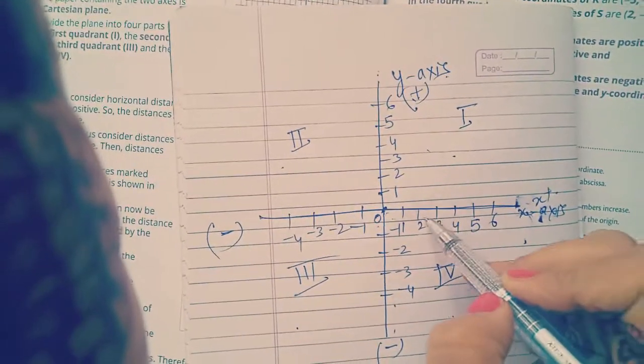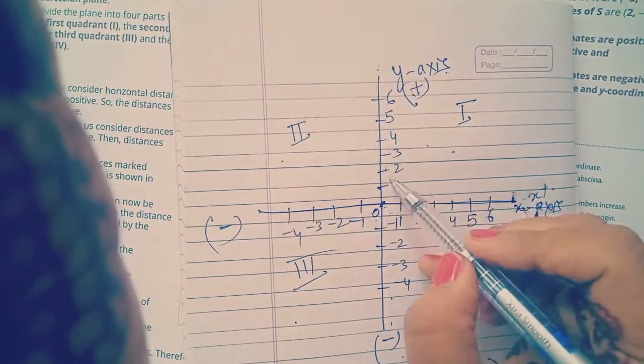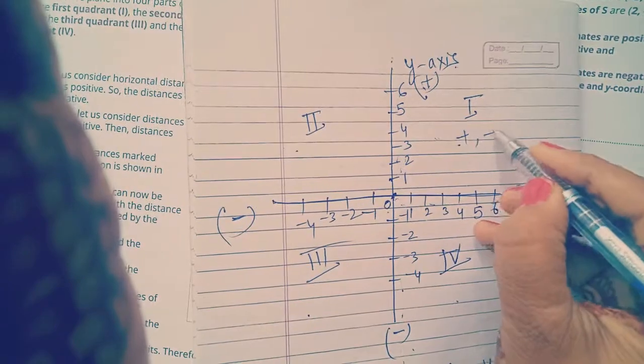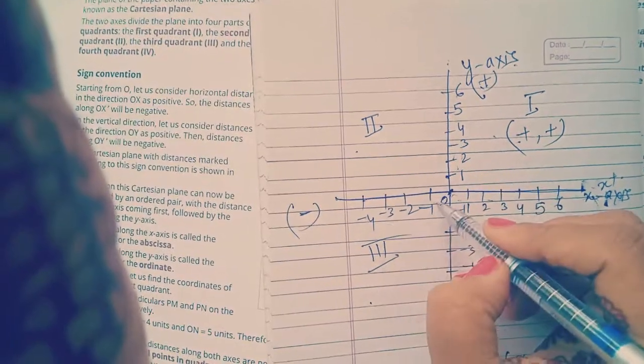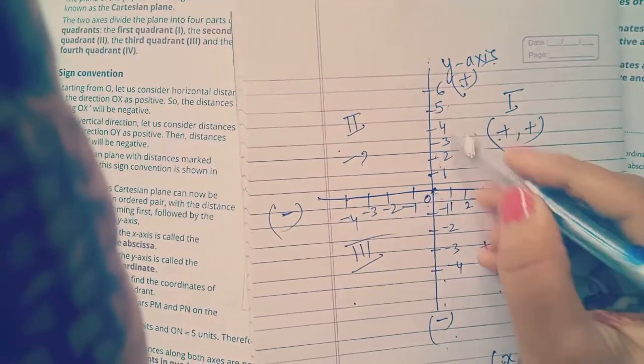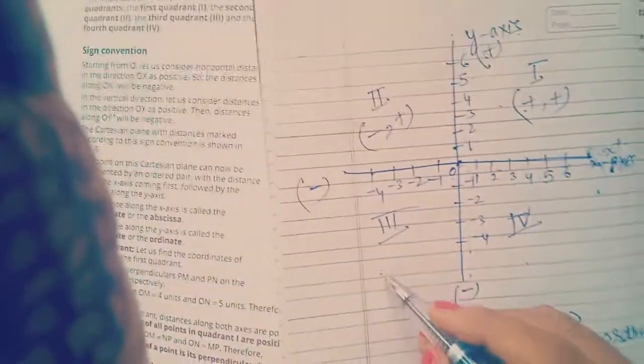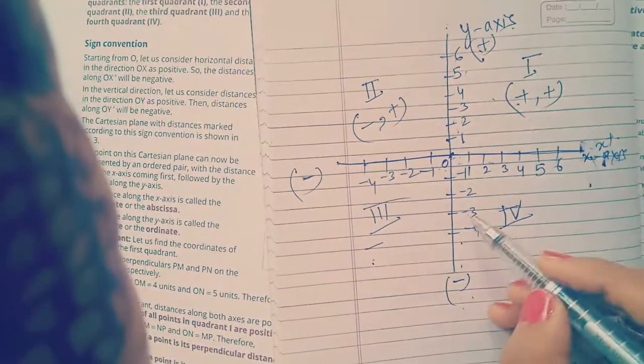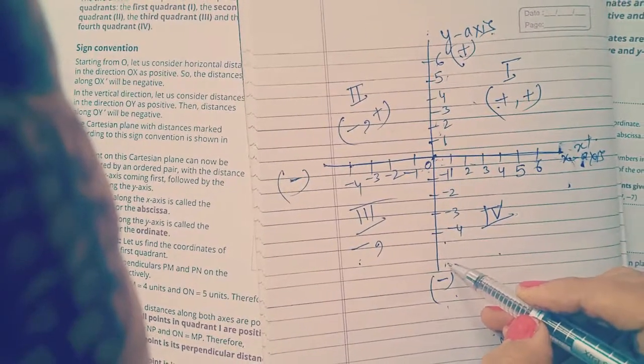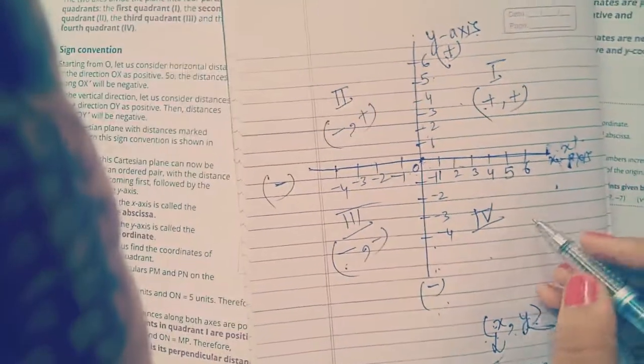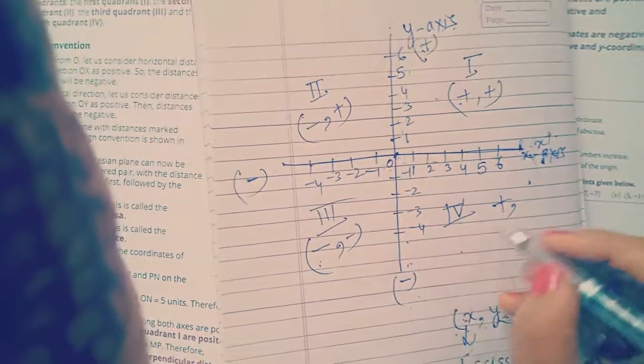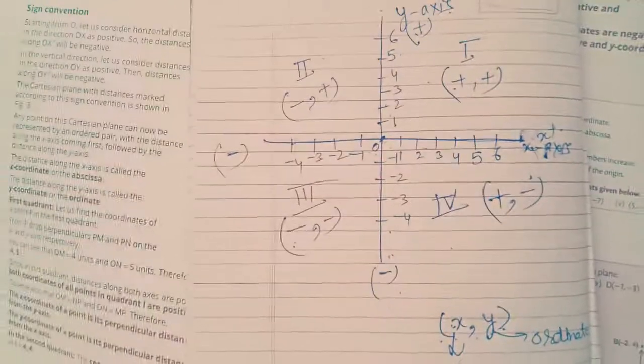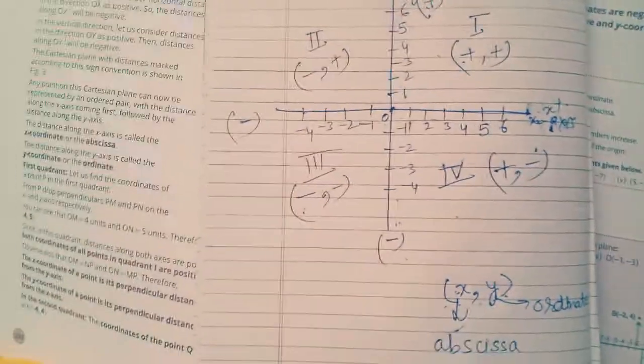So here in first quadrant, x values are also positive and y value is also positive. Both values are positive. And in the second quadrant, x value is negative and y is positive. In the third quadrant, x value is negative and also your y value is negative. Then in fourth quadrant, value of x is positive and value of y is negative. So by just observation, we can tell in which quadrant this point will lie.